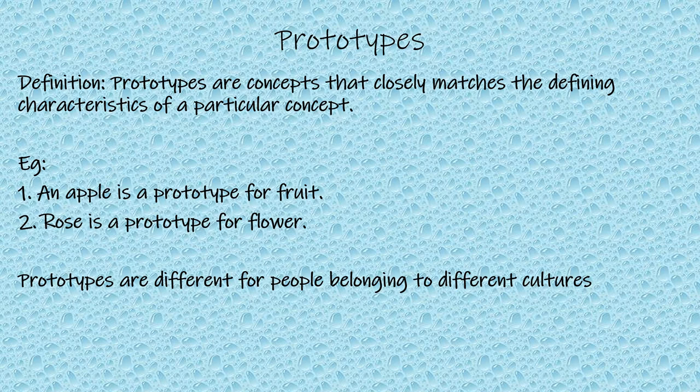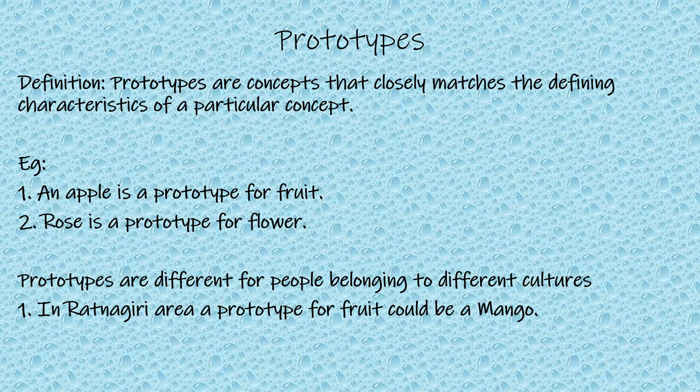Prototypes are different for people belonging to different cultures. For example, in the Ratnagiri area, a prototype for fruit could be a mango. Why? Because in Ratnagiri, mangoes are more common.